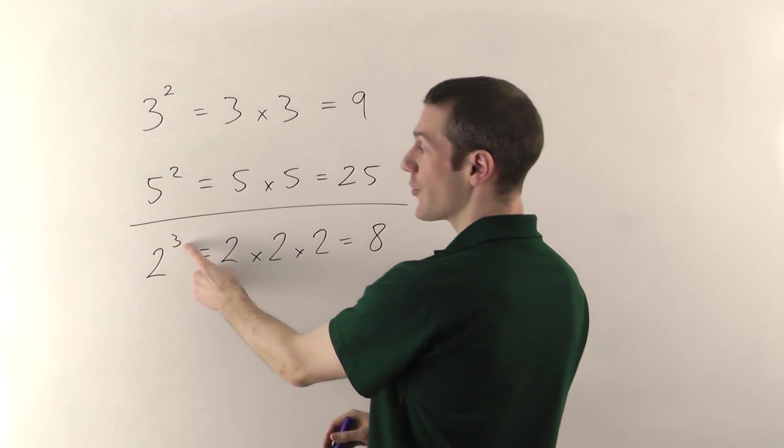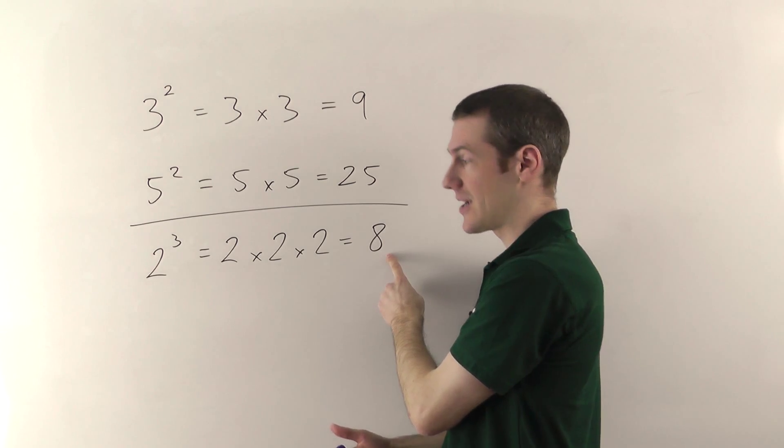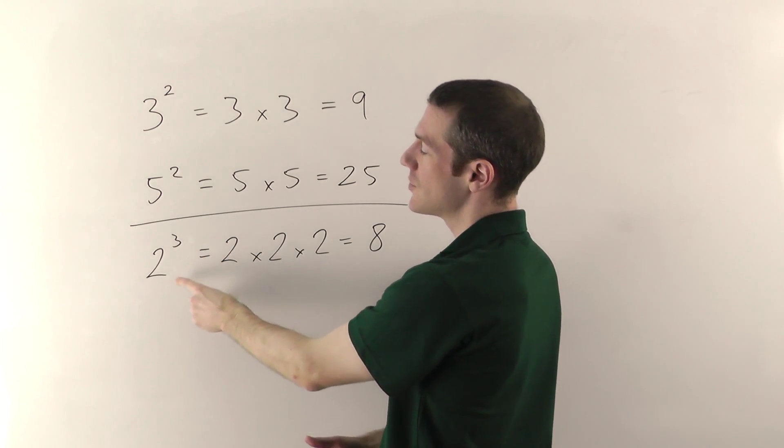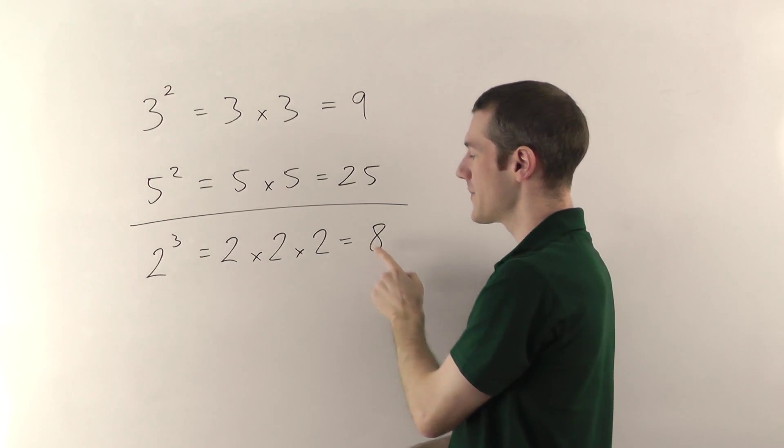Now again, be careful here, it's not 3 times 2. 3 times 2 would be 6. It's not 6, it's 8. The power, the 3, tells you how many 2's you've got. 1, 2, 3 2's all multiplying together gives you 8.